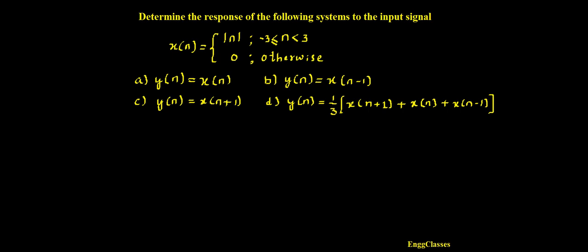Welcome to NG Classes YouTube channel for a video lecture series in digital signal processing. In this video lecture we shall consider a numerical: determine the response of the following systems to the input signal x(n) = |n| for n varying from -3 to +3, and zero otherwise. The systems are: (a) y(n) = x(n), (b) y(n) = x(n-1), (c) y(n) = x(n+1), and (d) y(n) = 1/3 * [x(n+1) + x(n) + x(n-1)].